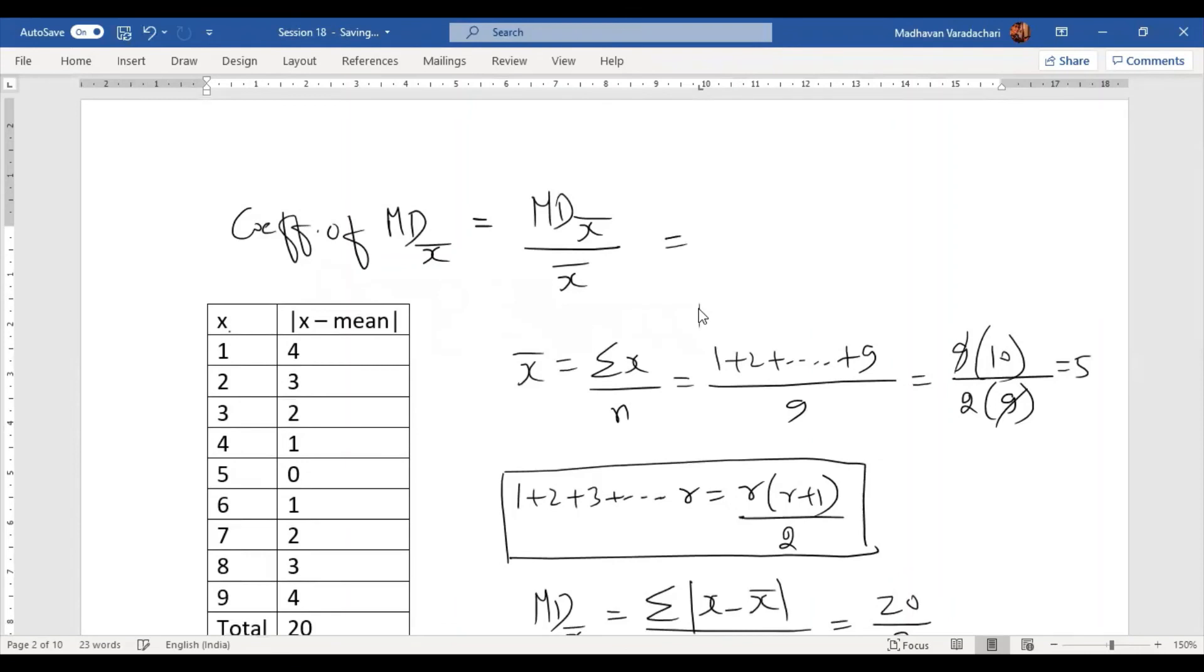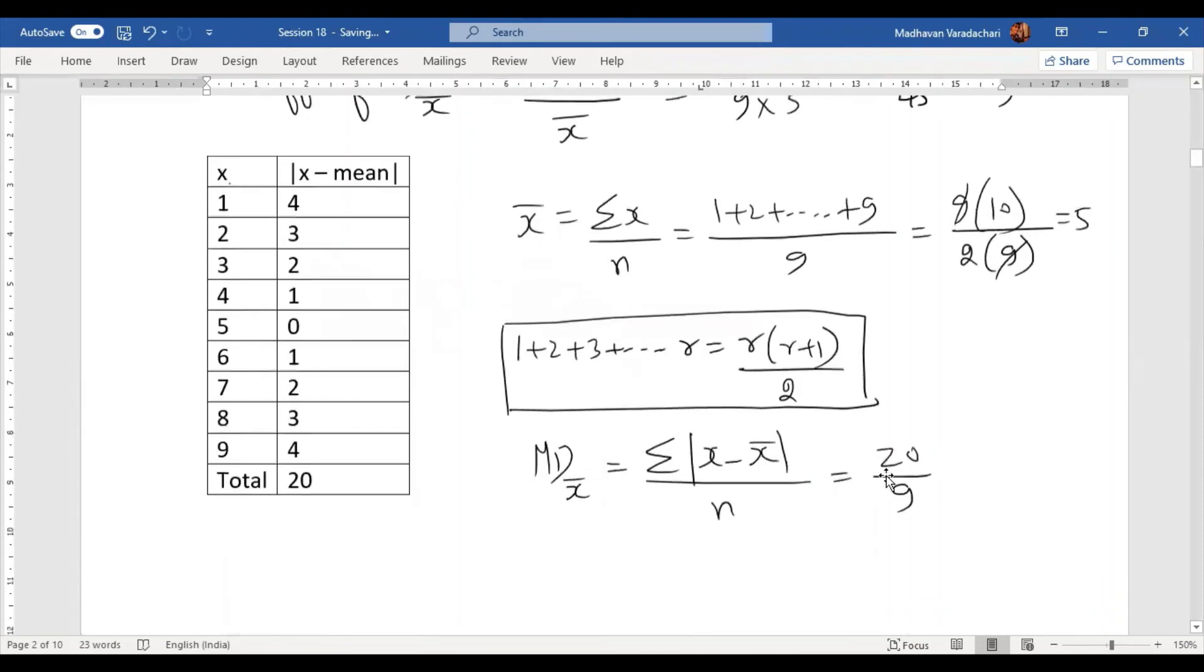Now I can find out coefficient of mean deviation about mean, which is 20 by 9, and there is a x̄ in the denominator. We know x̄ is 5, so it is nothing but 20 by 45. So that can be simplified as 4 by 9. That is the coefficient of mean deviation about mean.